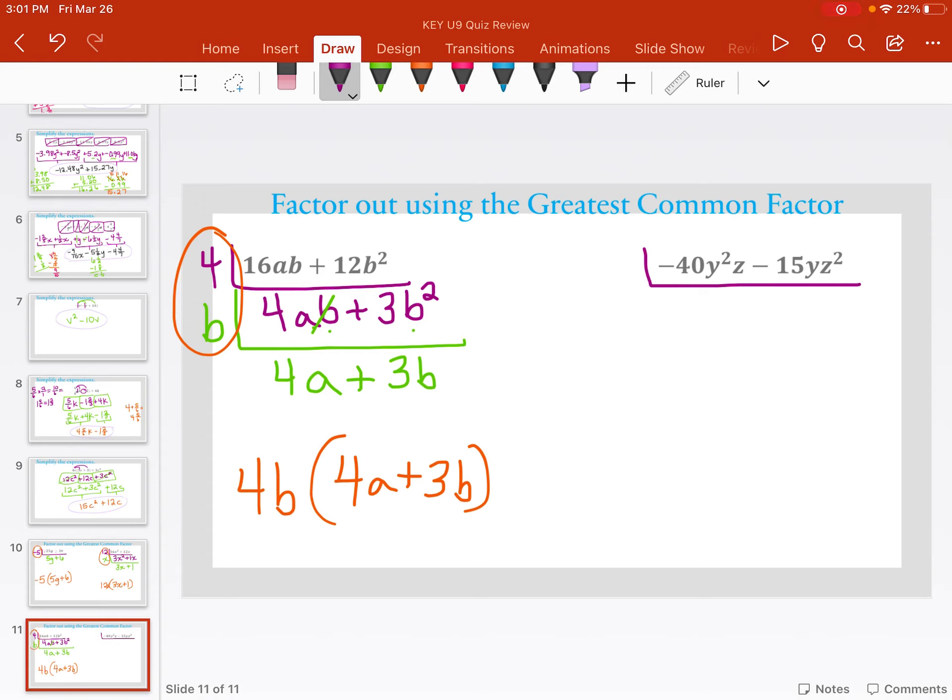Okay, last one. Negative 40 and negative 15 both have a negative 5 in common. So let's pull that out. Negative 40 divided by negative 5 is positive 8y squared z plus, because I'm pulling that negative out,